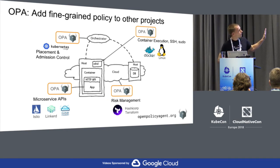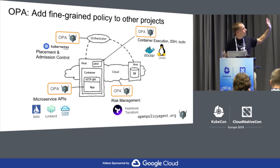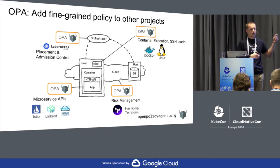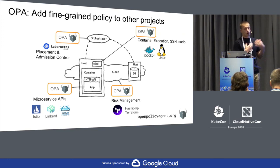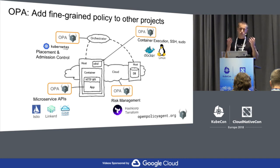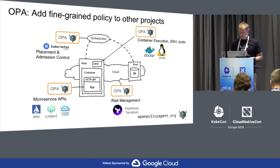So that's the goal of OPA. The goal is the realization that we're doing policy and authorization at all these different layers of the stack today. But the problem is that we're using different mechanisms to enforce those authorization policies. What OPA aims to do is provide a single language for expressing policy at all these different enforcement points, a single tool set, a single user experience.